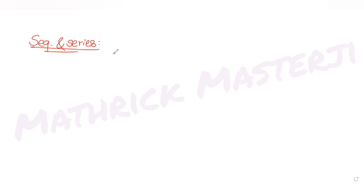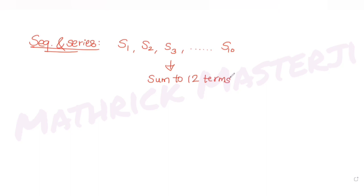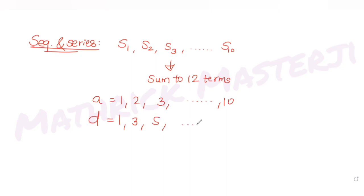The question tells us: let S1, S2, S3 till S10 respectively be the sum of 12 terms of arithmetic progressions. These are 10 arithmetic progressions whose first terms are 1, 2, 3 till 10, and the common differences for each of these 10 APs go from 1, 3, 5 till 19.